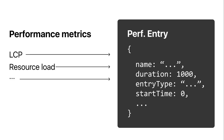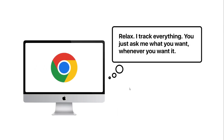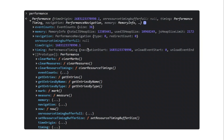Each entry will have a name, a duration, a start time, and a type property — these four properties are common across all entries. For the most part, you don't really have to do anything to get these entries; most performance entries are recorded by the browser. You can directly access them via the performance object present on the global object, which has a `getEntries()` method that gives you information related to all performance events that have taken place inside your application.